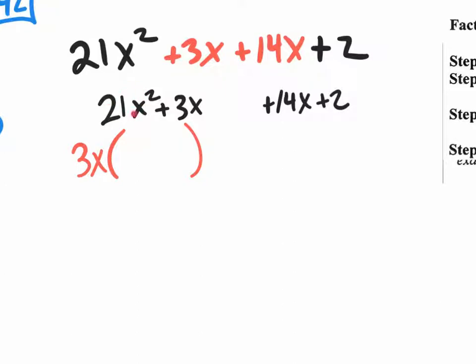What would be left? 3x times what takes us back to a 21x squared? That would be a 7 with an x. And then 3x times what would get us back to 3x? Plus 1. There you go.